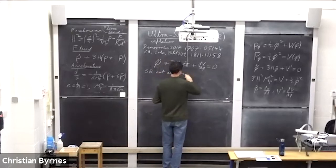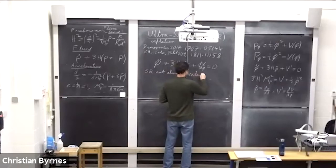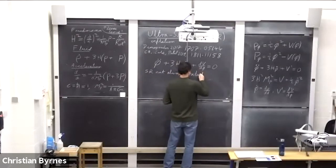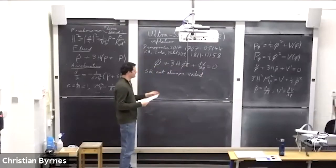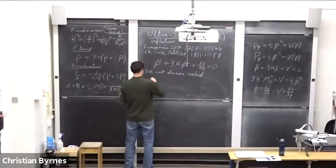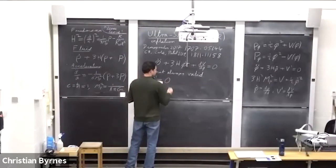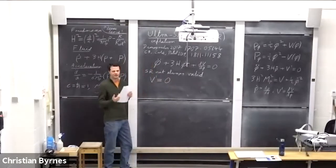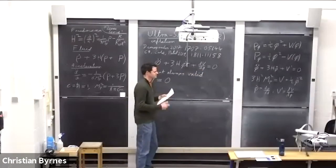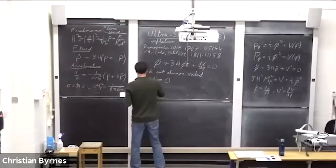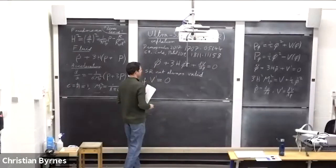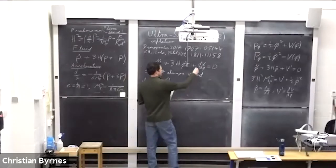Slow roll can break down actually because the potential is too flat — slow roll is not always valid, or at least not always a good approximation. We're going to study the case where V prime equals zero, or alternatively where it's sufficiently close to zero that we have to neglect this term.